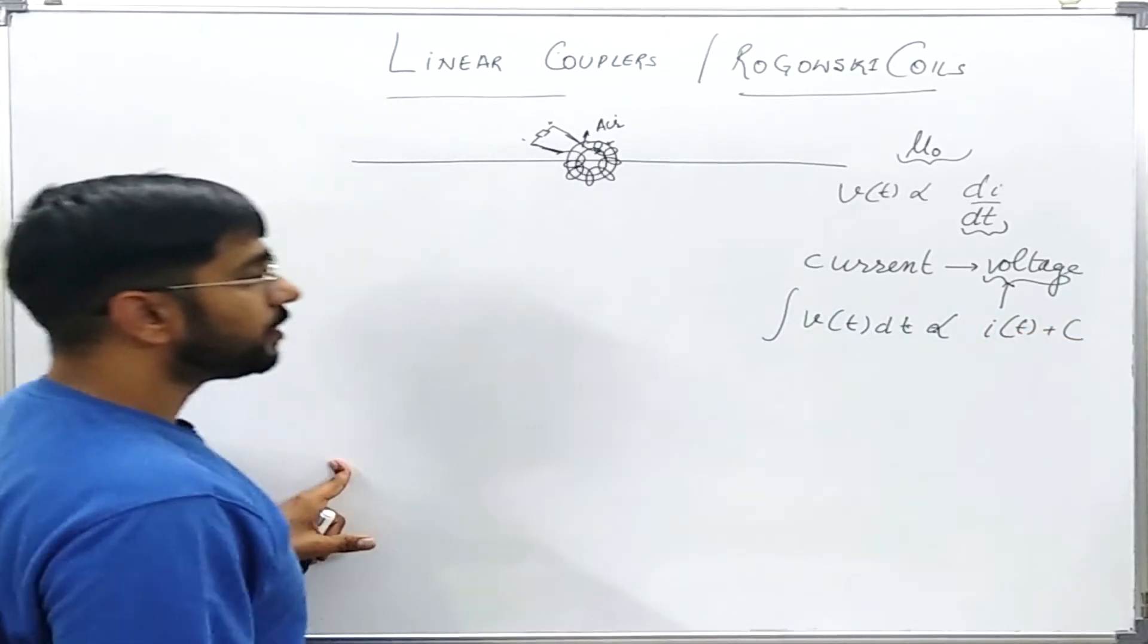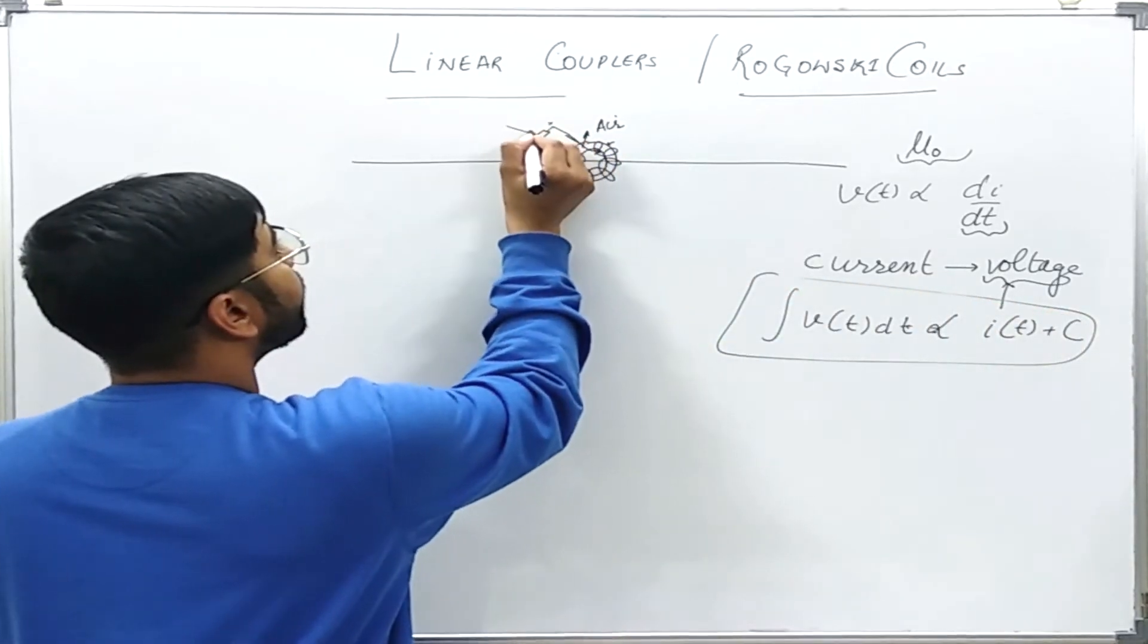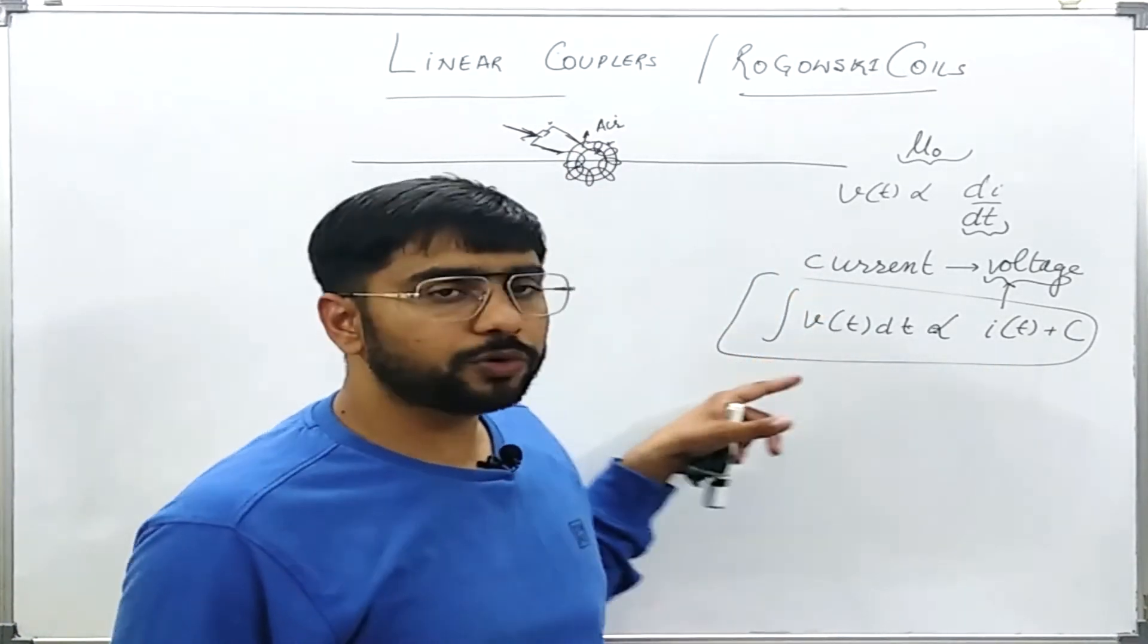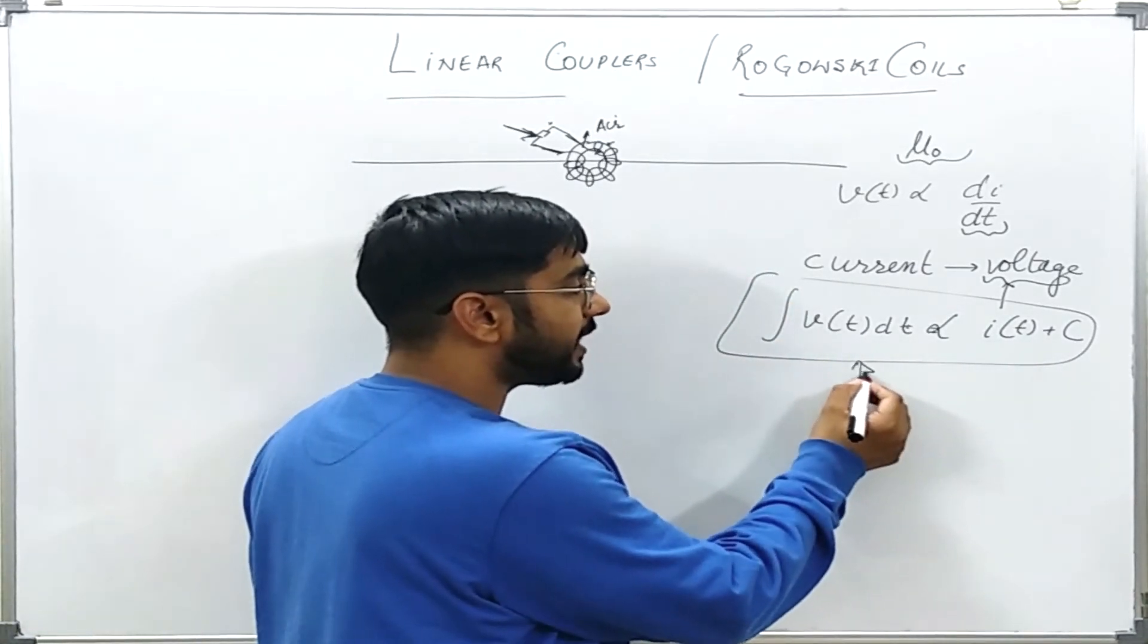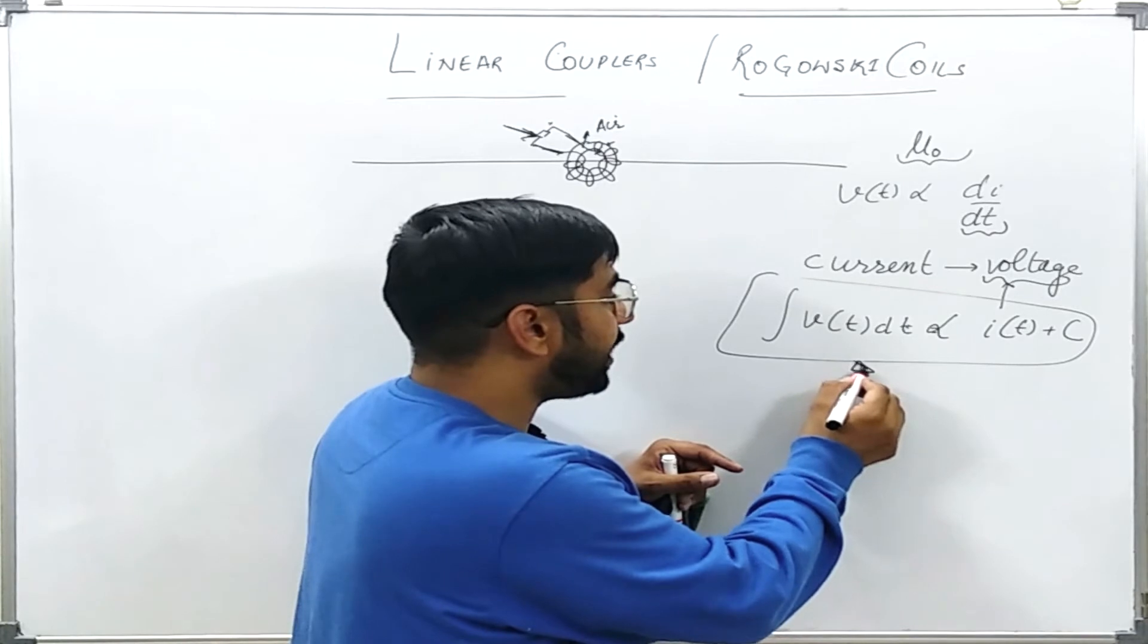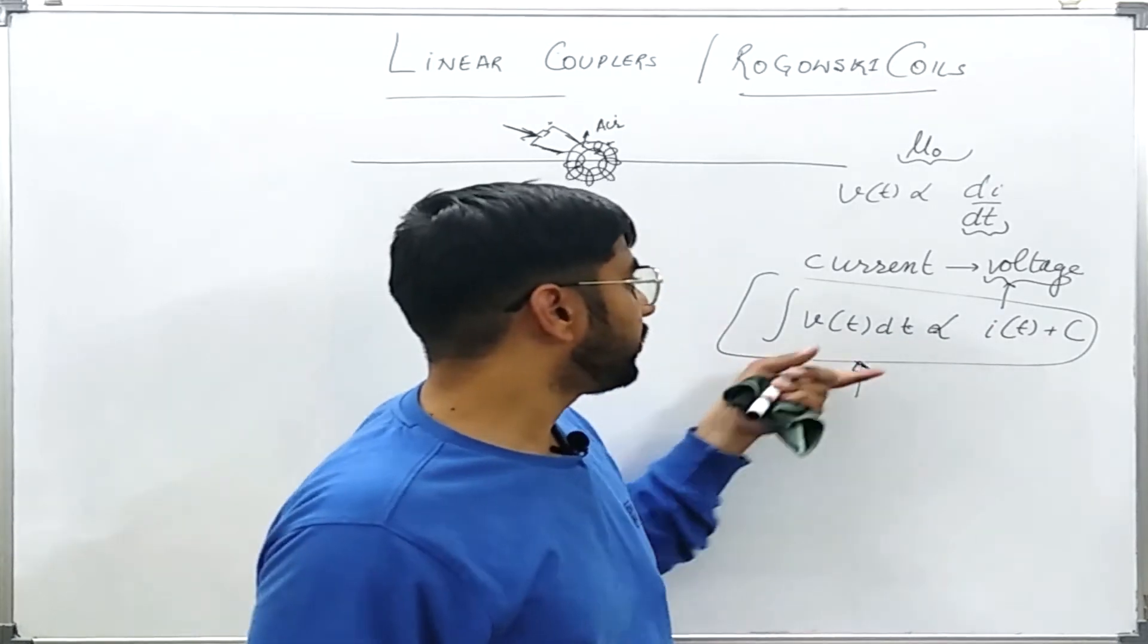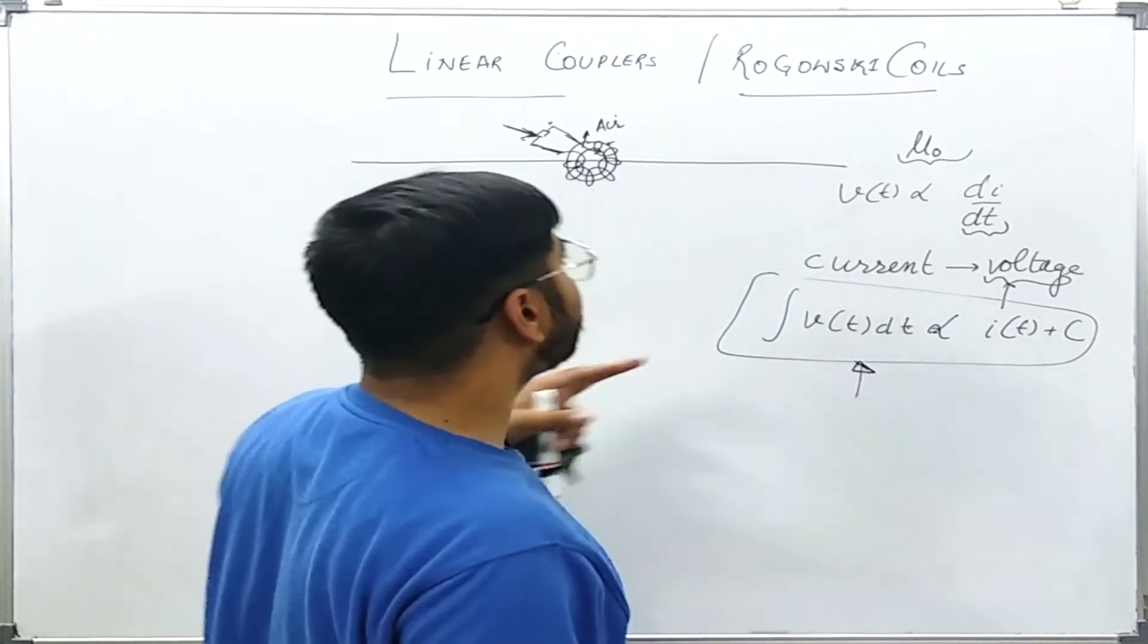This integrated value will be fed to the relay. Because of this I will have to use some integrator. That integrator will require some DC supply at least to function. This thing will create additional requirement of DC supply. Because of some other issues like noise might be there because of using of this integrator, since the signal levels are not that much strong so noise may be introduced. Because of this, these devices are usually not that much common in the power system.